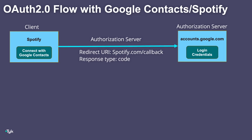Two key pieces of information are sent: the redirect URI and the response type. The redirect URI tells the OAuth server where to send me after I've authenticated, and the response type dictates the grant type the client will use to reach the requested resources — in this case, my Google contacts. The most common example is the authorization code grant, meaning the resource is granted through an authorization code, which you'll see in just a moment.